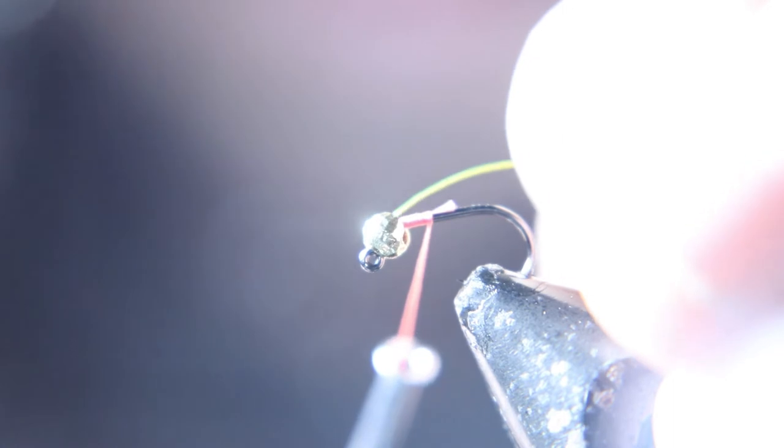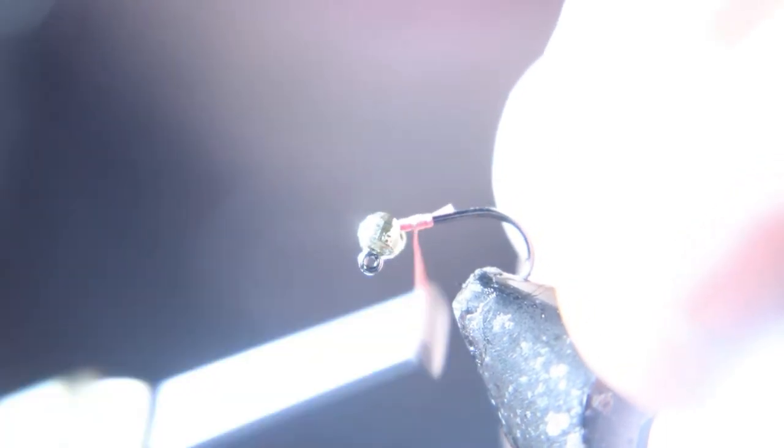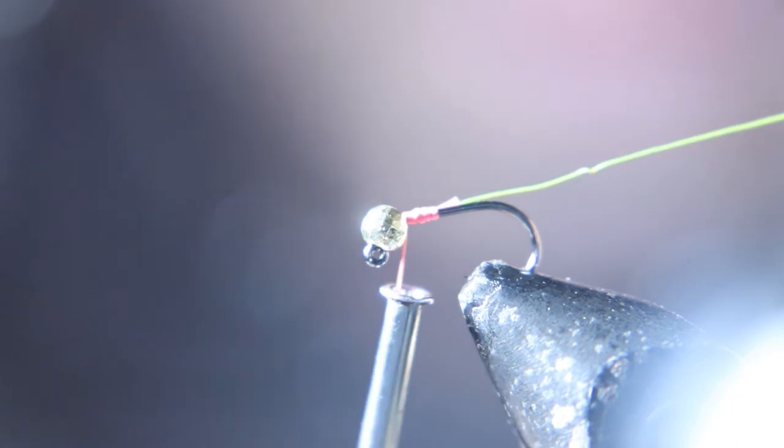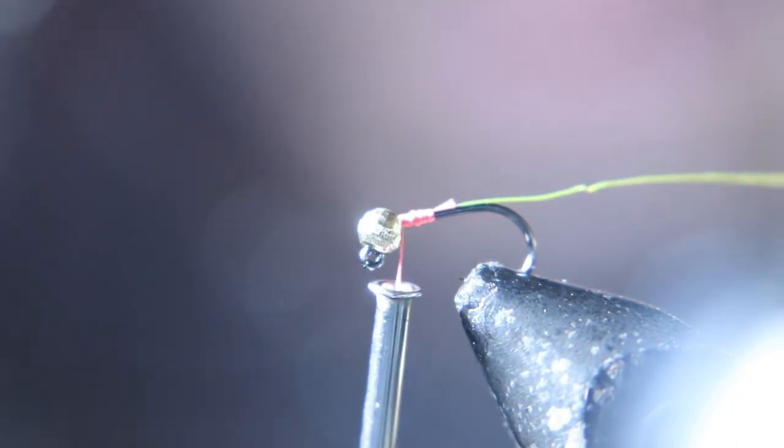We're going to tie in gold wire if you're using a gold bead. I'm going to tie in this sun yellow wire. We're going to rib the fly with that.